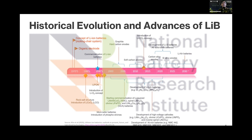New intercalation materials were also introduced, such as spinel and olivine structures like lithium iron phosphate (LFP). As for LCO, it also evolved into NMC by substituting a proportion of cobalt with nickel and manganese. There are also many other battery technologies that were invented and are predicted to take over the usage of lithium-ion batteries in the future.